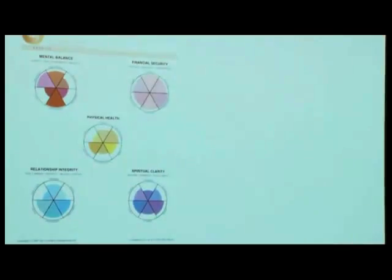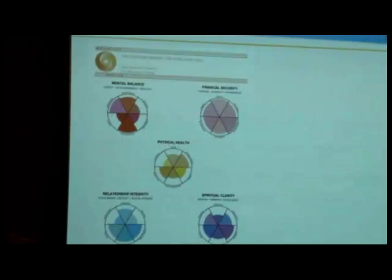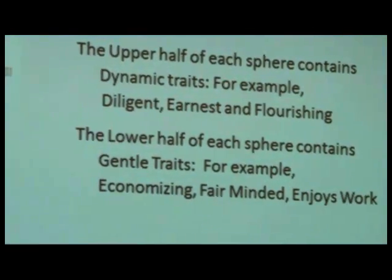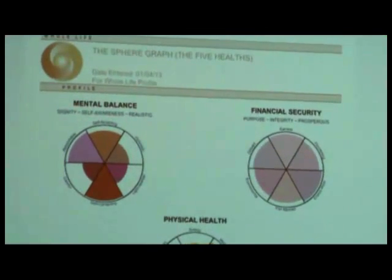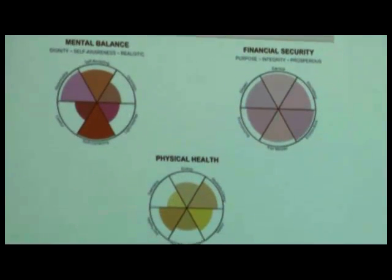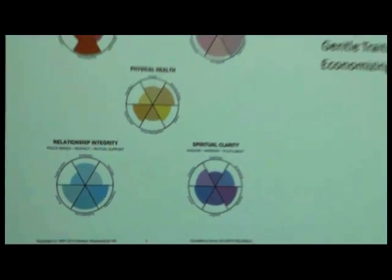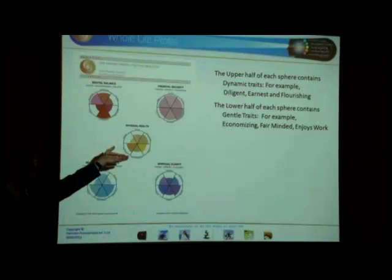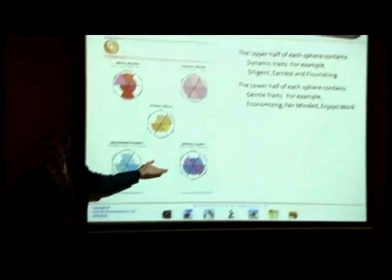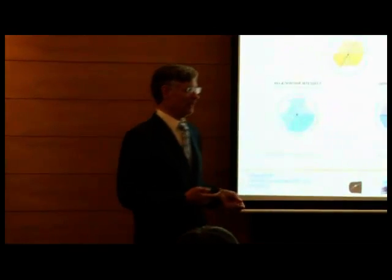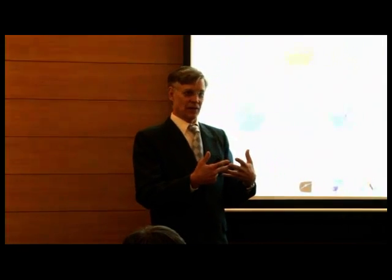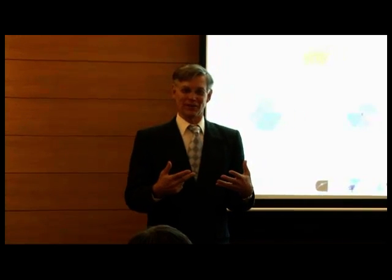We look at five different spheres. In this case, we look at mental balance, or what you could call psychological health — that would be the first sphere. Then relationship health or relationship integrity. The next one is physical health. The next is financial security or financial health. And the last one is spiritual clarity or spiritual health, which we'll explain in more detail. The concept is that it's important to be successful in all of those areas of life, not just one.